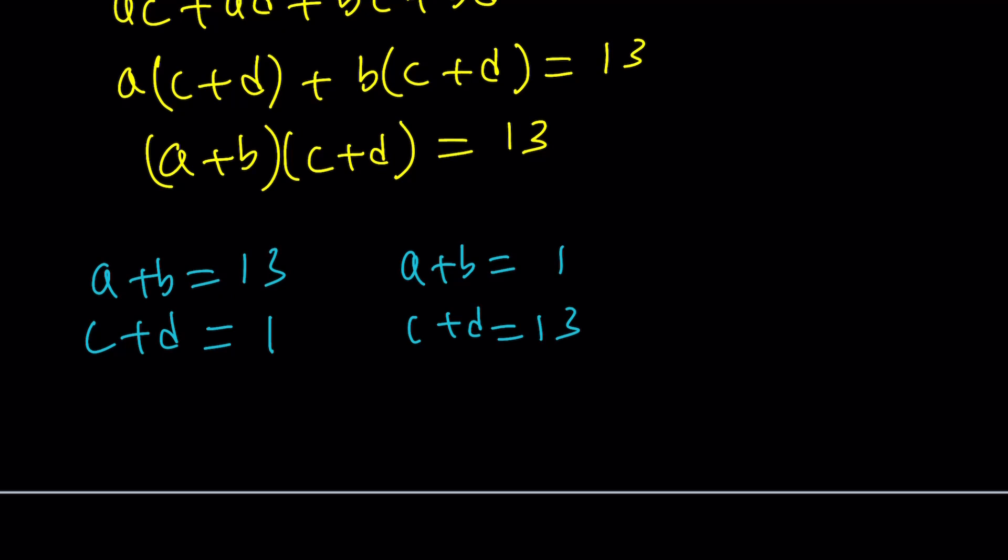Now, there's two more cases with the negatives, but if you look at them, like, for example, A + B = -1, and C + D = -13. Since A, B, C, D are non-negative, their sums cannot be negative. So, these two cases are not going to be considered, because they can't work.